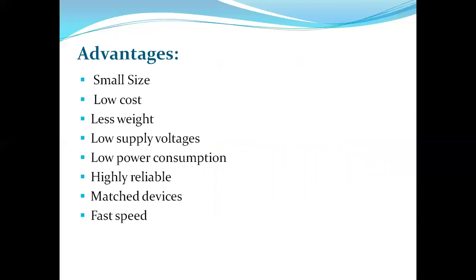Coming to the advantages of ICs: the first advantage is small size — practically the size of an IC is thousands of times smaller than a discrete circuit. Next is low cost: thousands of silicon wafers consisting of more number of components are produced simultaneously, which is called mass production. Due to this, the cost of an IC is very low, and hence millions of ICs are now in use annually. The third advantage is less weight: since components are fabricated on a single silicon wafer, the weight of an IC is very much less compared to a discrete circuit consisting of the same number of components.